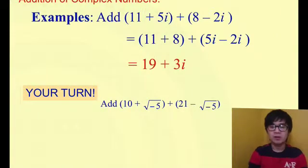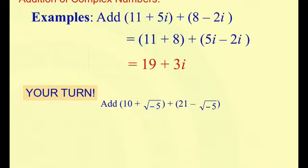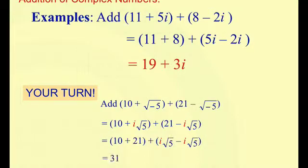If you know the rule of simplifying complex numbers, you should know that square root of negative 5 is simply i square root of 5. If you changed it, you could have 10 plus i square root of 5 plus 21 minus i square root of 5. If your answer is correct and you still remember what we learned last semester, your answer would have been 31.